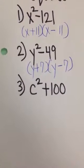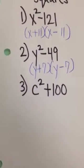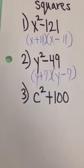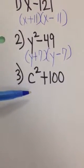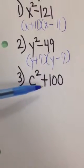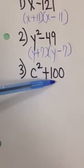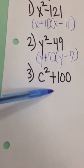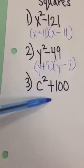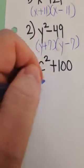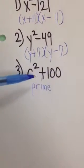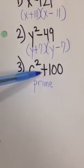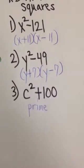Look for a greatest common factor possibly — you might have to take that out before using a special factoring technique. For the last example, we have a binomial where 100 is a perfect square, but in the middle we have a plus sign. This cannot be factored, or you can write 'prime,' because we must have a minus sign in the middle to use the difference of squares.